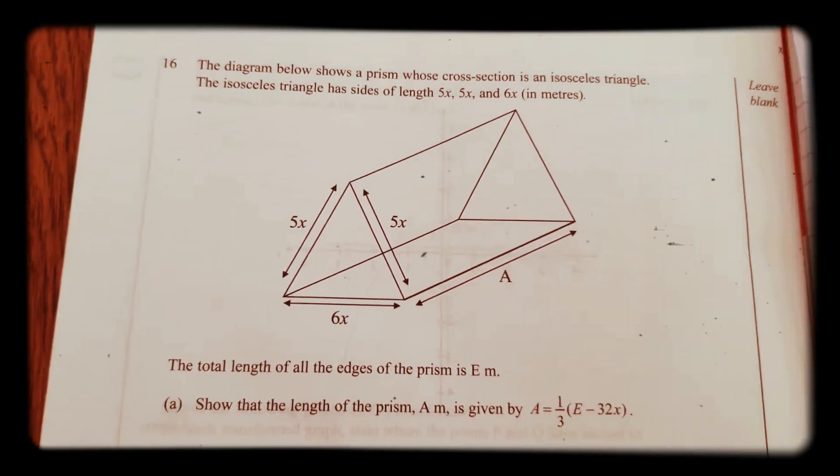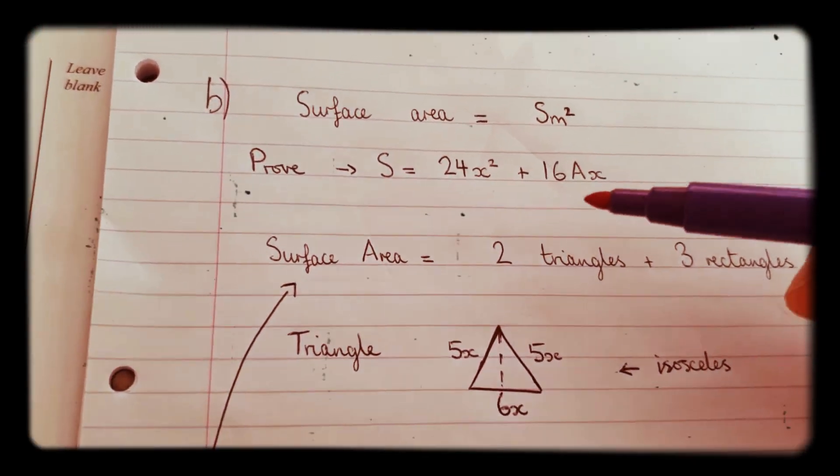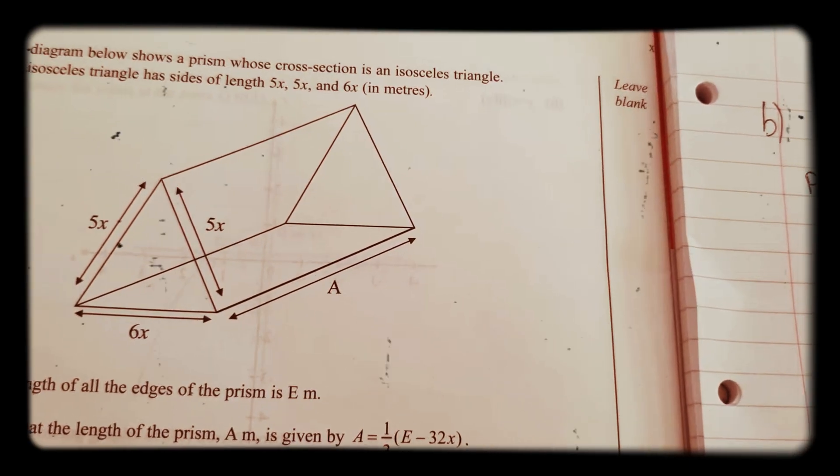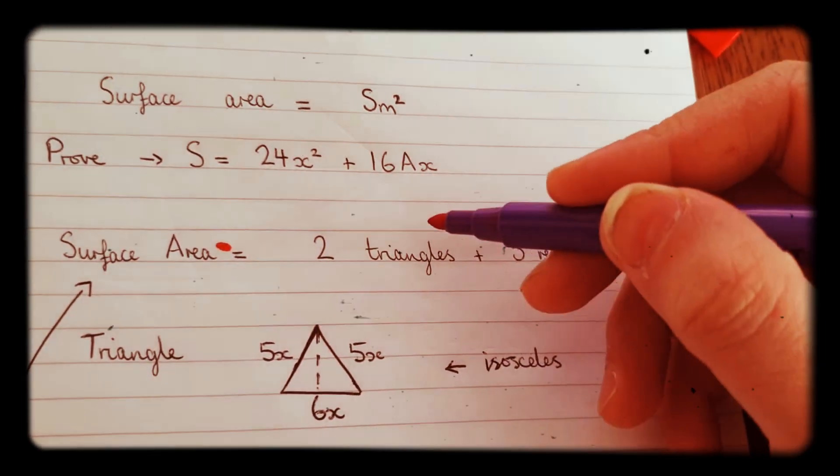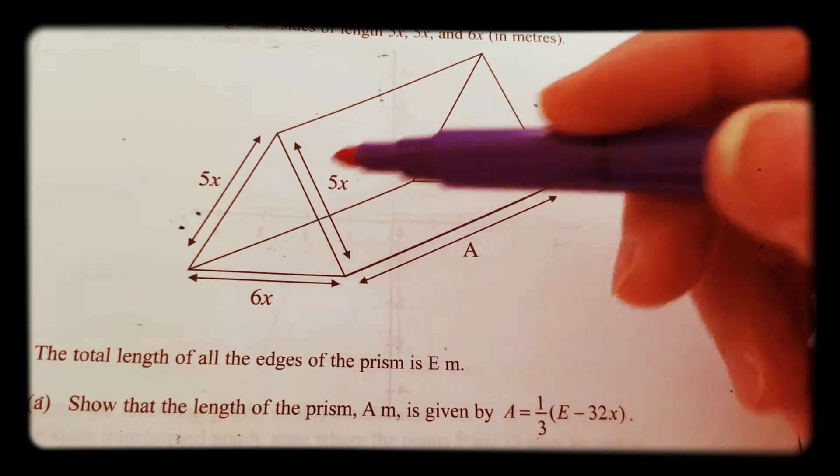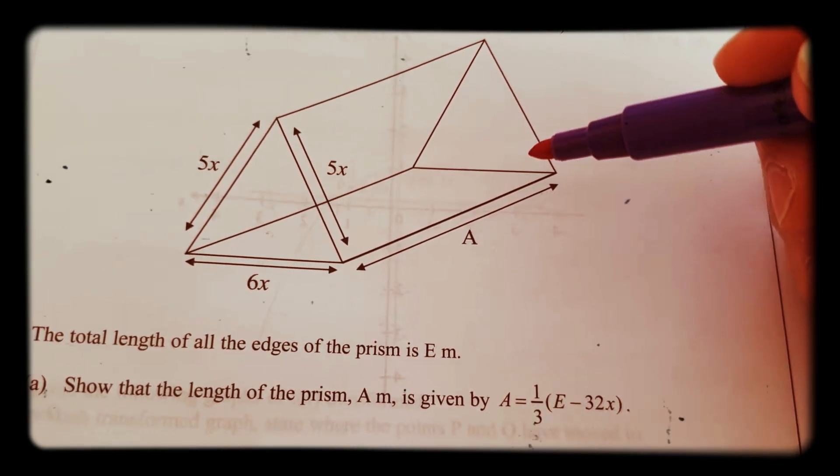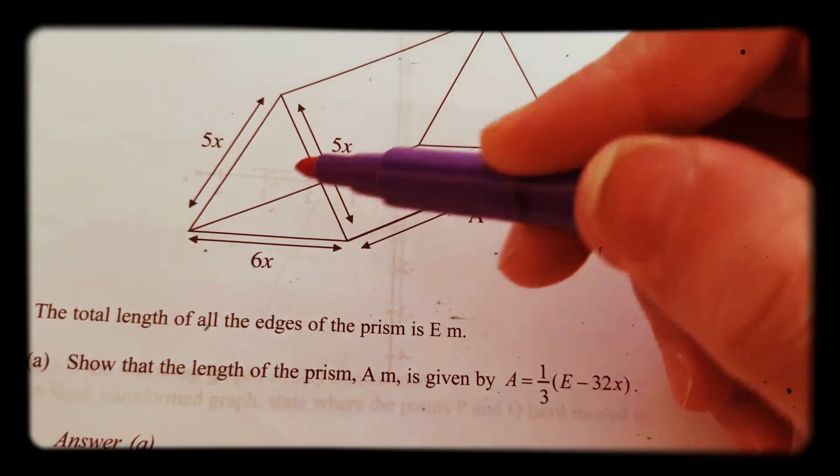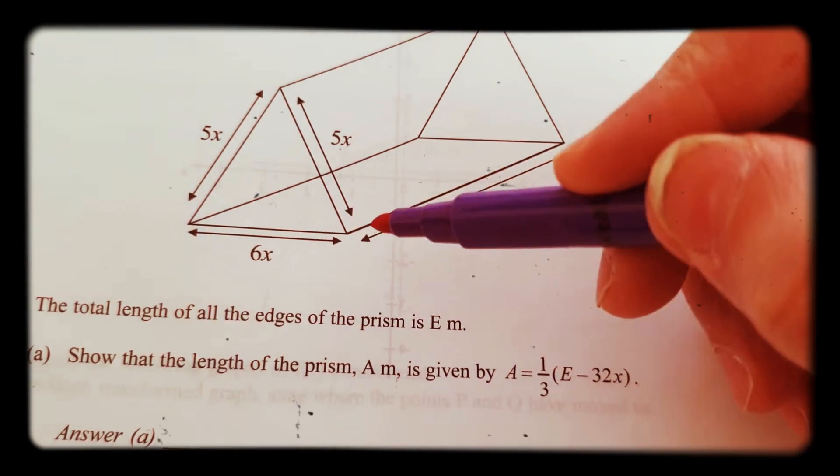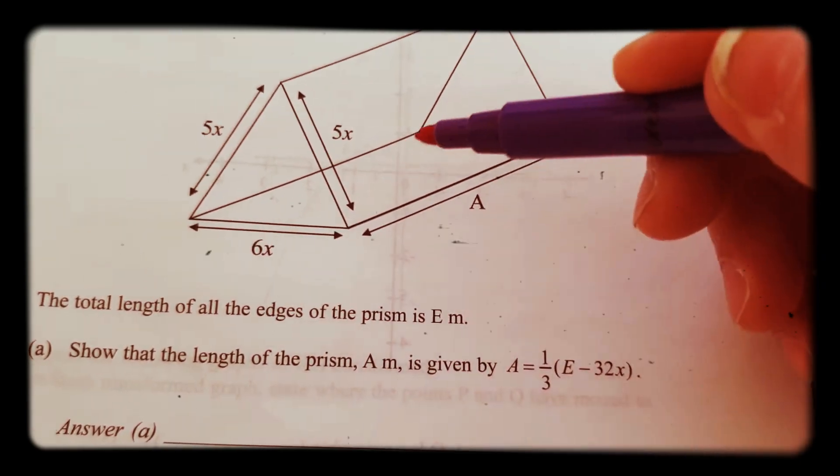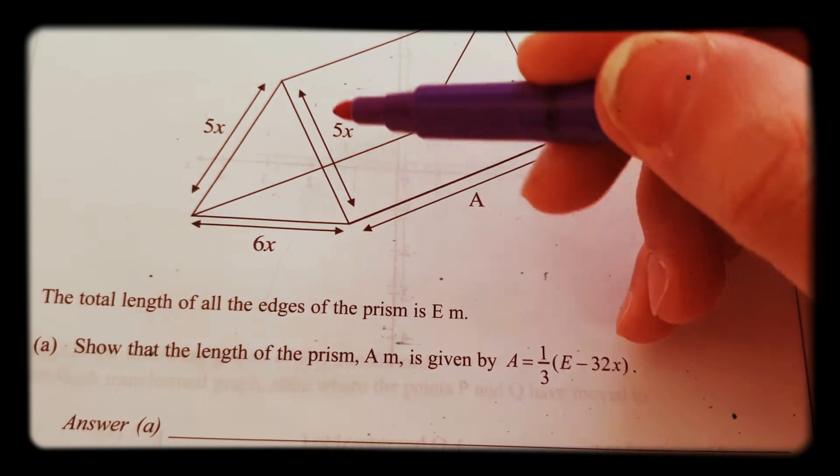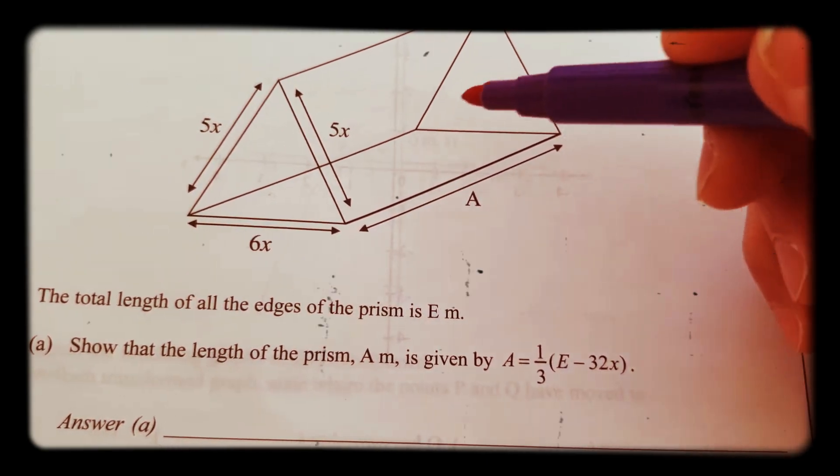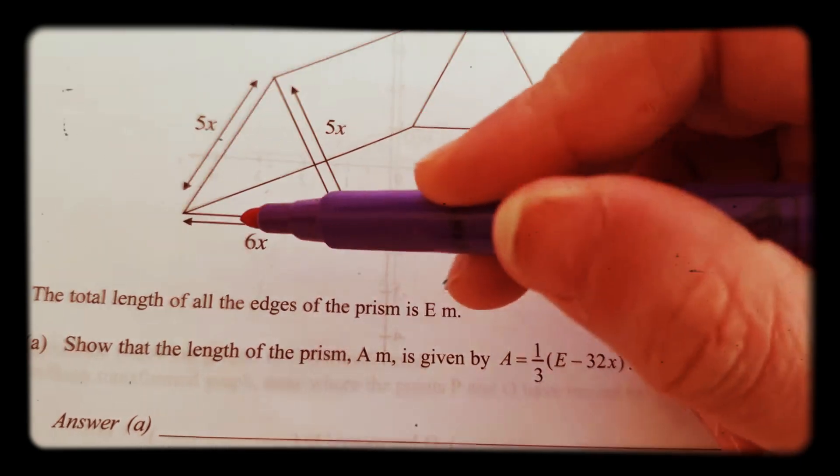So the way we do this is we need to look at the surface area of this prism and figure out what exactly it is. We have two triangles - one triangle and the other one - and then we have three rectangles. We have this one here, that one on the other side, and then this one at the bottom which is a slightly different rectangle because it says 6x there. These ones are 5x width and this one is 6x width. So we've got two triangles and three rectangles with one of them being different.